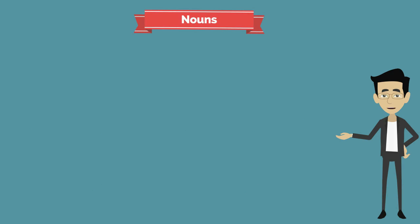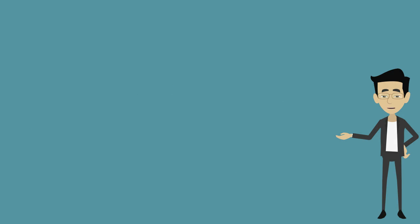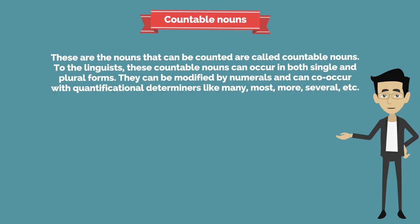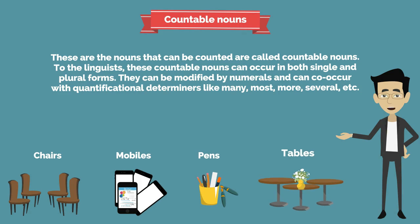Nouns are further classified into two types: countable nouns and uncountable nouns. Countable nouns are those that can be counted. They can occur in both singular and plural forms, can be modified by numerals, and can co-occur with quantificational determiners like many, most, more, several, etc. Examples: chairs, mobiles, pens, tables, and so on.